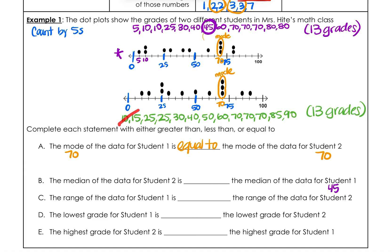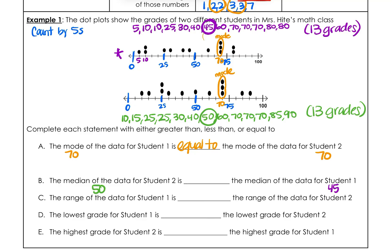Now for student two's median, same process — cross off pairs from each end. For student two, 50 is the median. So student two's median is 50 and student one's is 45. Is 50 greater than, less than, or equal to 45? It would be greater than — 50 is greater than 45.